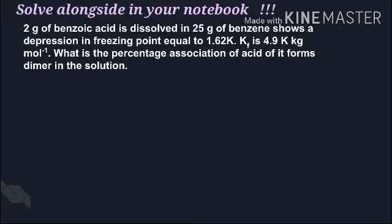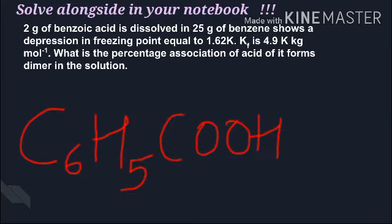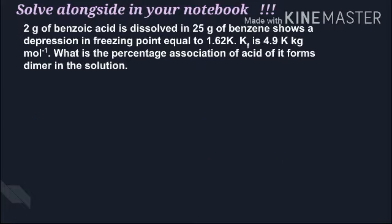M₂ comes out to around 241.97. This is the calculated molar mass of benzoic acid from the colligative property where we considered association. The actual mass of benzoic acid is - the formula is C₆H₅COOH. Calculate the molar mass, it comes to around 122.